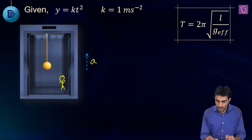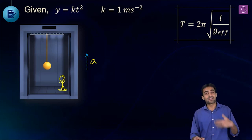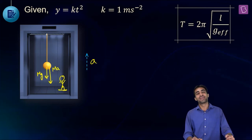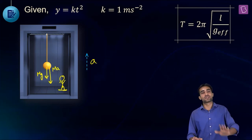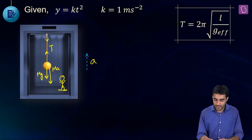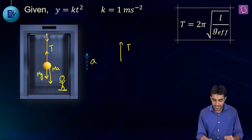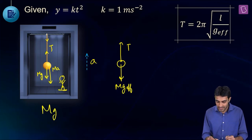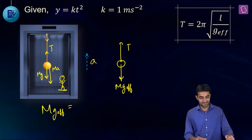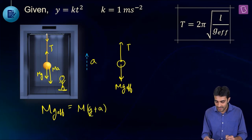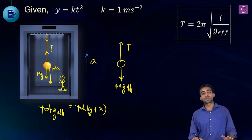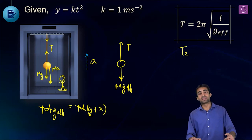In the non-inertial reference frame of the accelerating setup, we have mg downward, pseudo force ma upward (opposite to the frame's acceleration), and tension T. The resultant of all forces except tension gives M·G_effective = M(G + A), so G_effective = G + A.